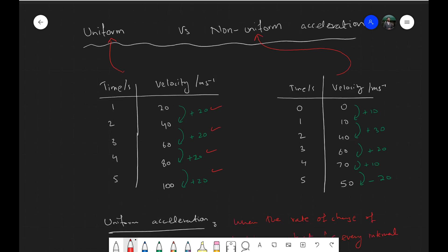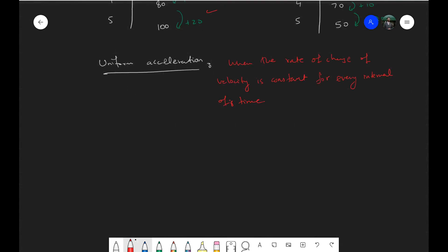And how would we define non-uniform acceleration? Well, we'll say the definition will be pretty much opposite to what the definition for uniform is. It will be when an object undergoes a change of velocity which is different.